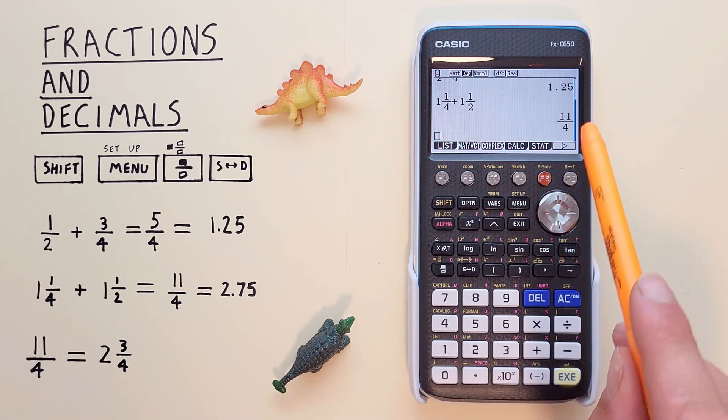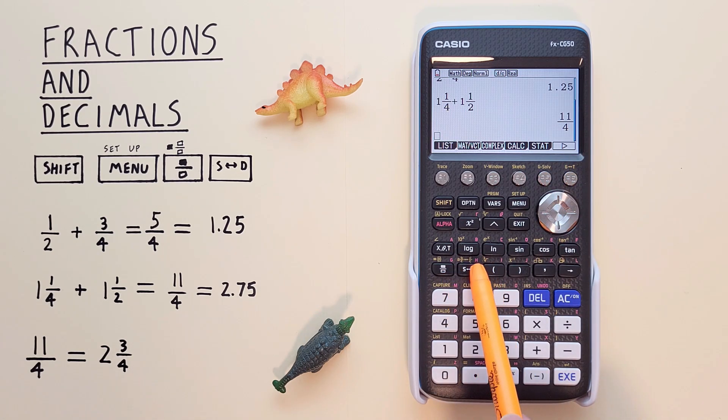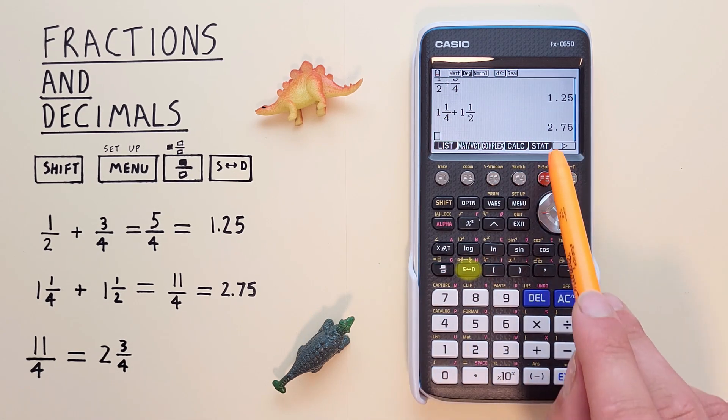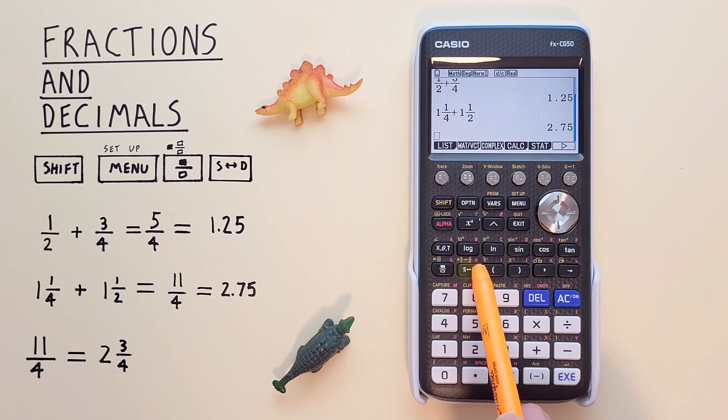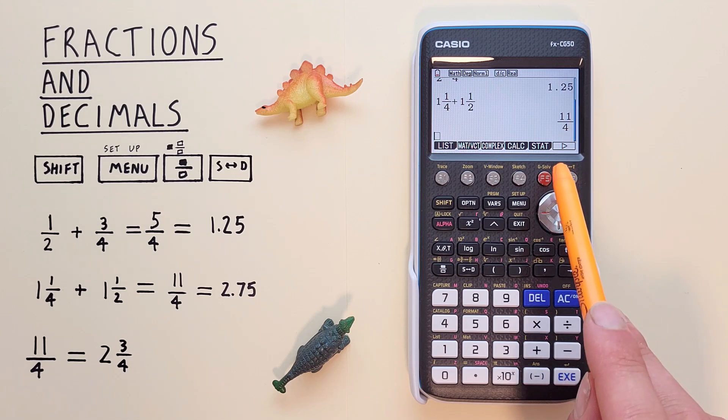And we get 11 over 4, which we convert with the STD key to get 2.75 or can convert back to 11 over 4.